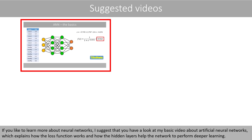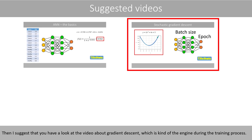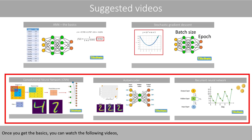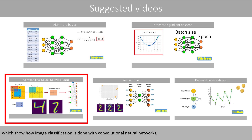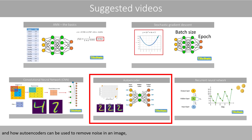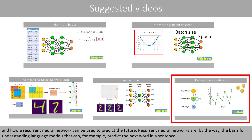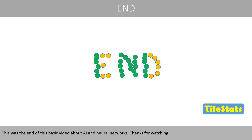If you'd like to learn more about neural networks, I suggest that you have a look at my basic video about artificial neural networks, which explains how the loss function works and how the hidden layers help the network to perform deeper learning. Then I suggest the video about gradient descent, which is kind of the engine during the training process. Once you get the basics, you can watch videos showing how image classification is done with convolutional neural networks, how autoencoders can be used to remove noise in an image, and how recurrent neural networks can be used to predict the future. Recurrent neural networks are, by the way, the basis for understanding language models that can predict the next word in a sentence. Thanks for watching.